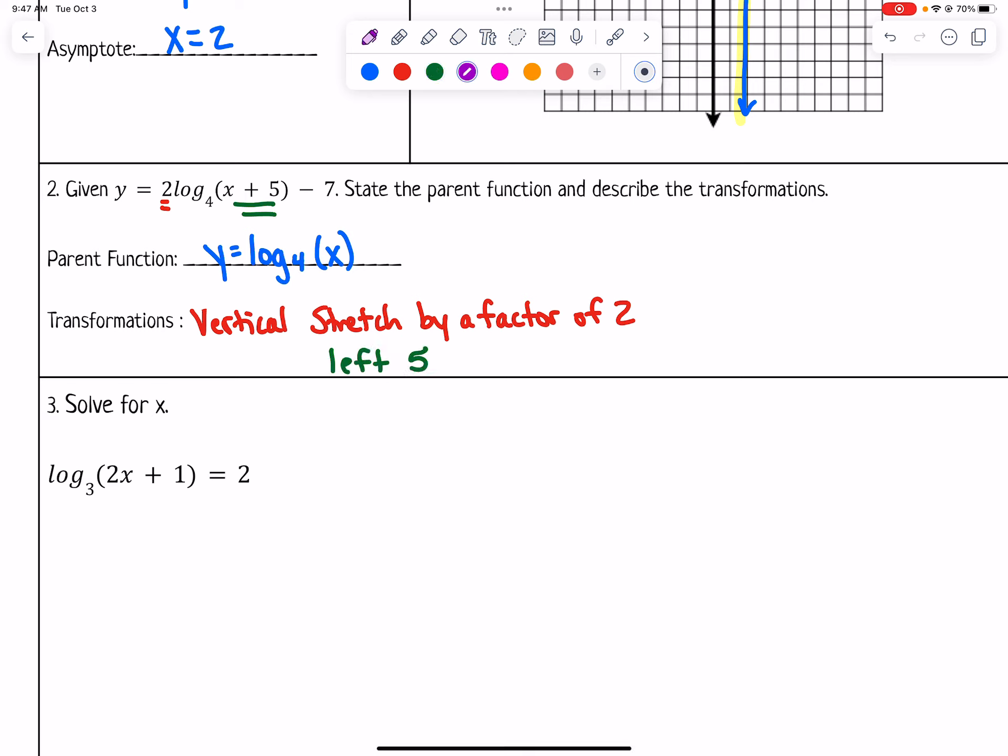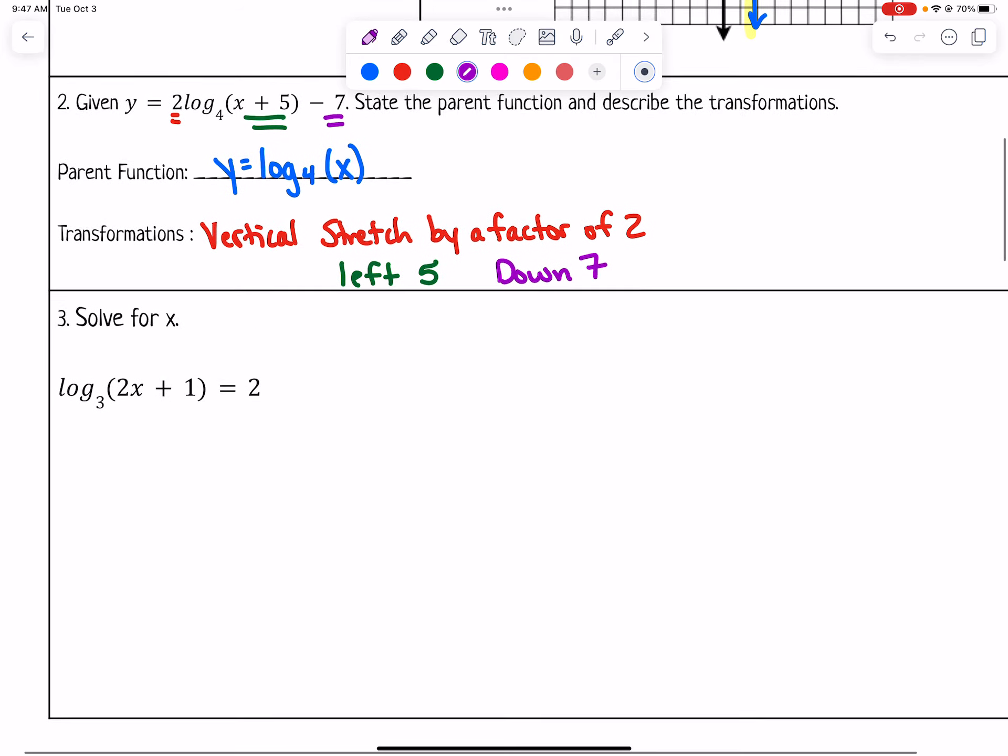It makes it go to the left 5. And then the minus 7 makes it shift down 7 because that's not in the grouping symbol. That's it for number 2.